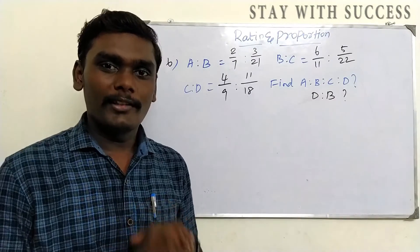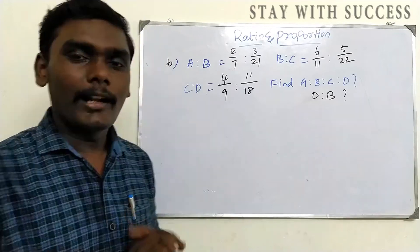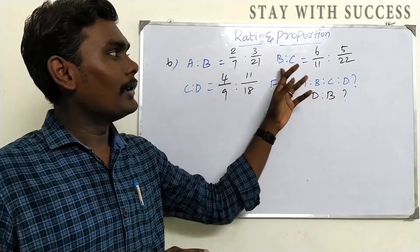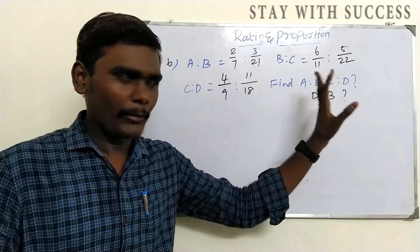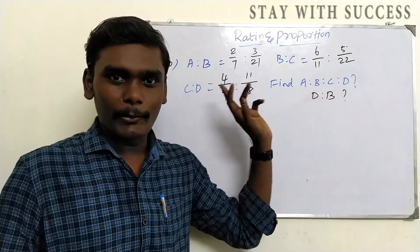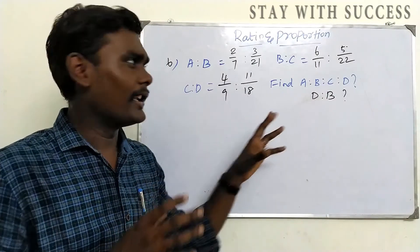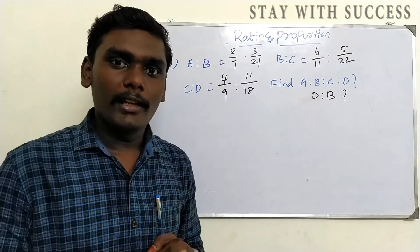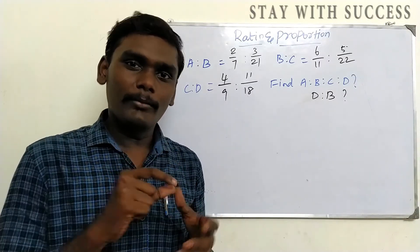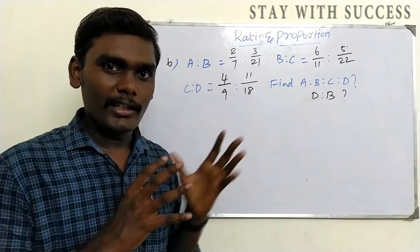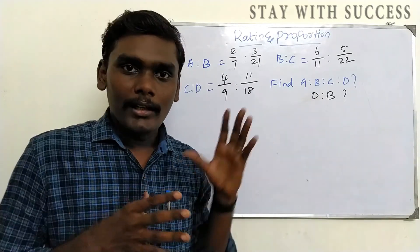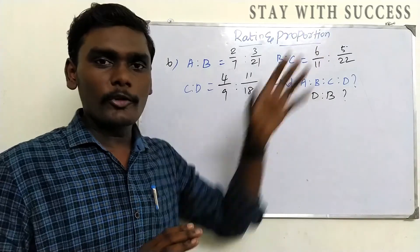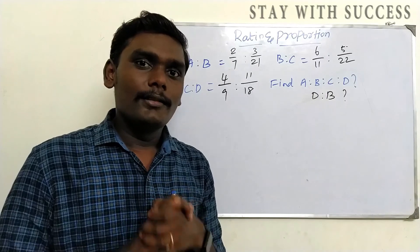Comment and let's go to the session. There is a practice problem: A to B is 2 by 7 to 3 by 21, B to C is 6 by 11 — find A to B to C. This is exactly the same type of problem. Also, calculate D is to B correctly. If you want to solve more problems, there is a link in the description to practice. In the first session and second session, there are many problem types. Thank you for watching — stay with success. See you in the next session.